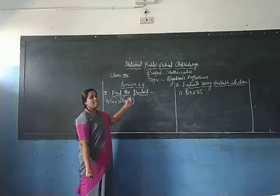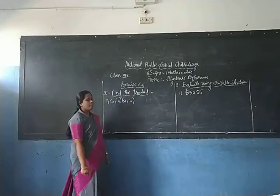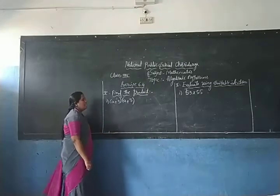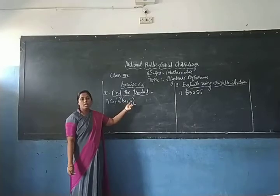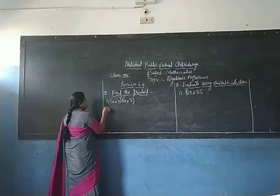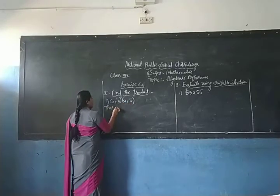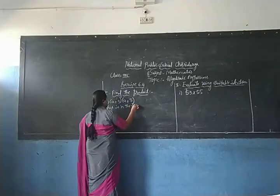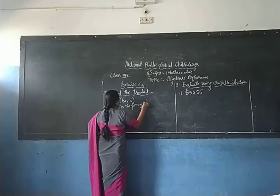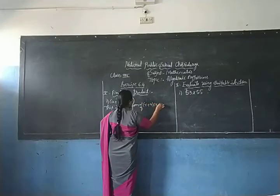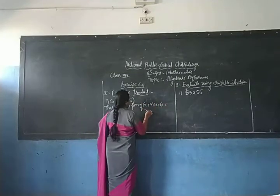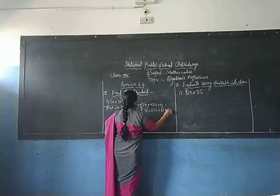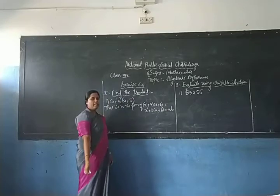Based on the special products and standard identities, this is Exercise 6.4. In the first problem, find the product (a+3)(a+5). This is in the form of (x+a)(x+b), which we covered in the last session as a special product.